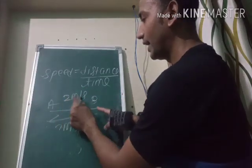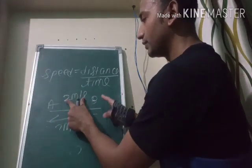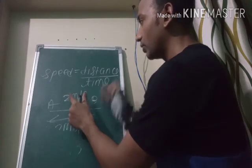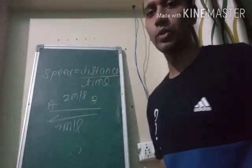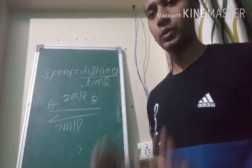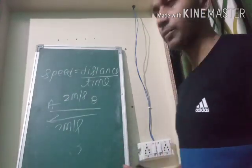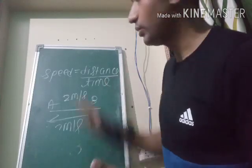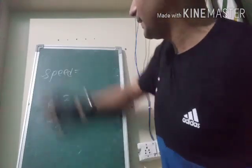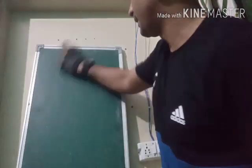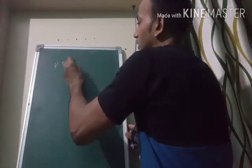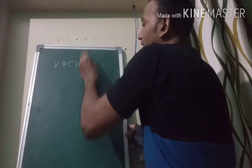So a physical quantity which depends only on magnitude — where the number is the magnitude and the unit follows — and is independent of direction, is called a scalar quantity. We have completed this topic. Now we move to the second heading: vector quantity.